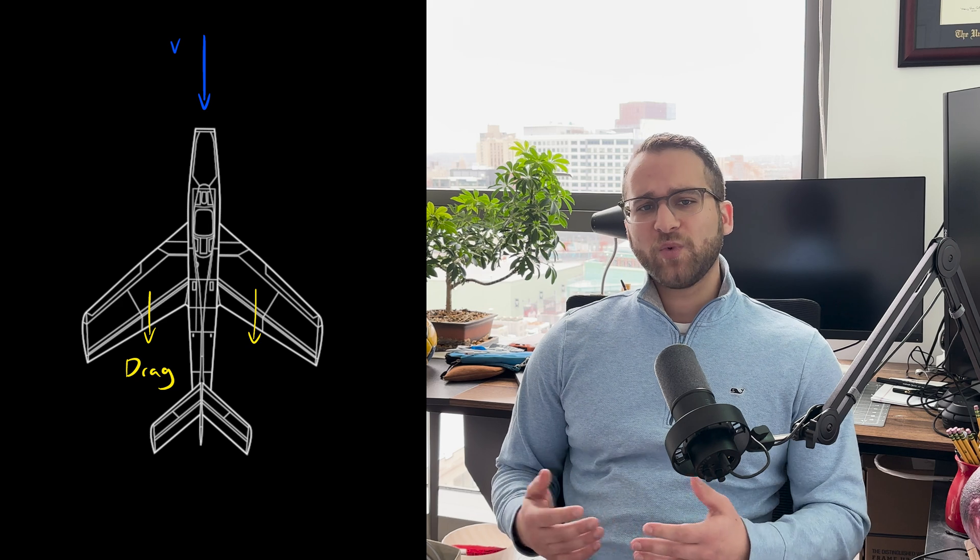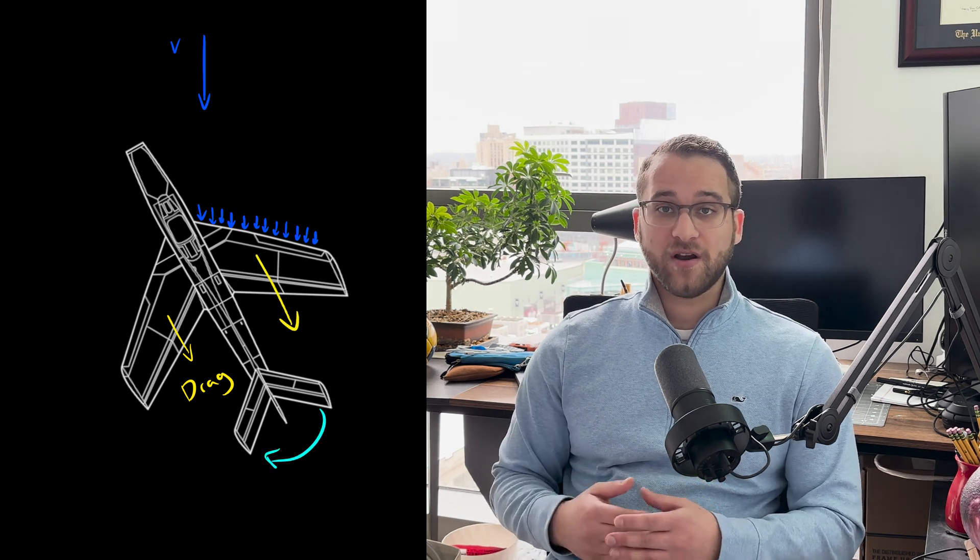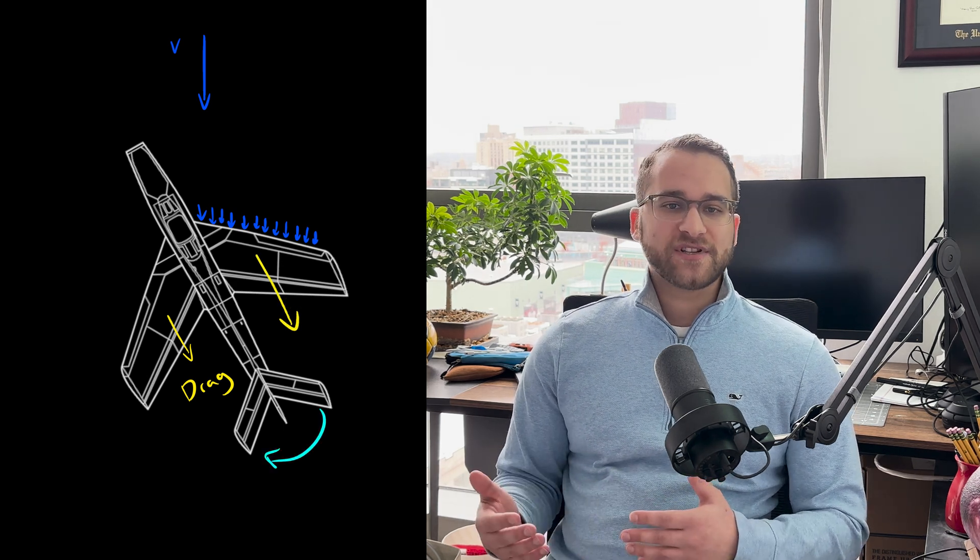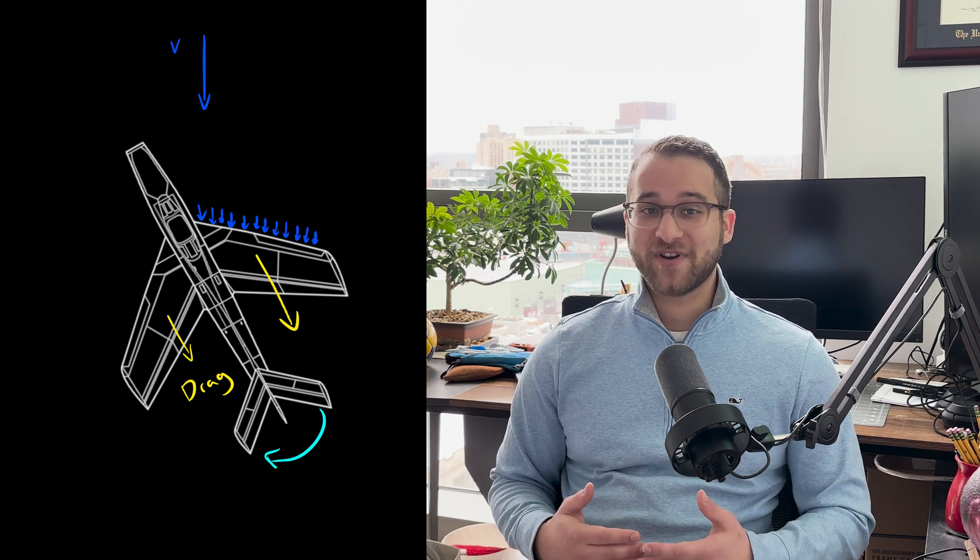Similarly, swept wings also contribute to yaw stability. When an aircraft yaws, the forward wing presents more area to the airflow, and it creates more drag, naturally correcting the yaw. This is one reason why many modern high-speed aircraft have significant wing sweep. It's not just for reducing transonic drag, it also helps with stability.